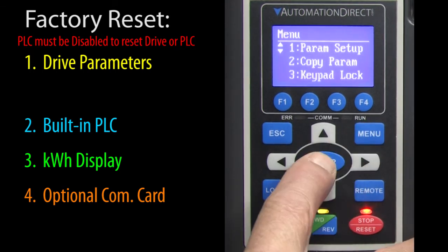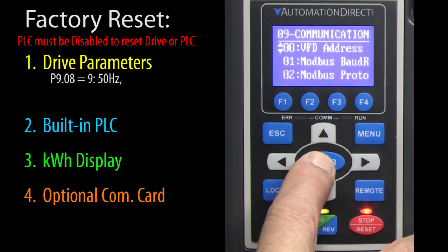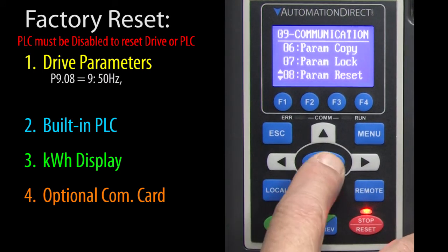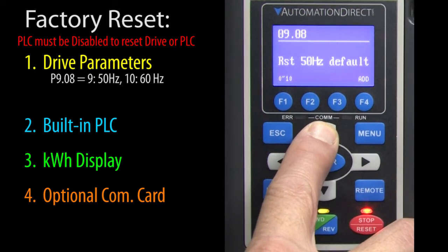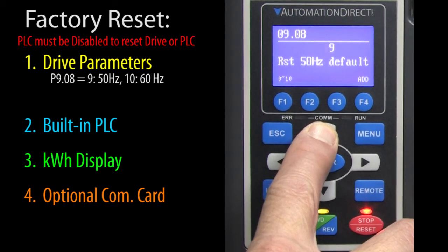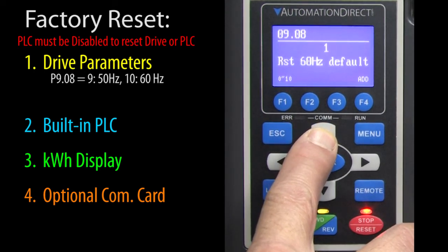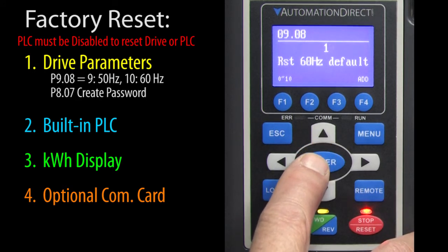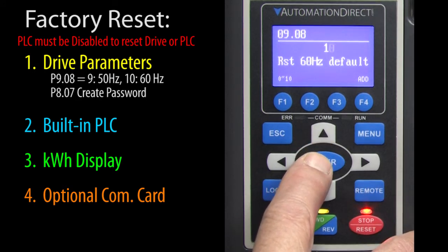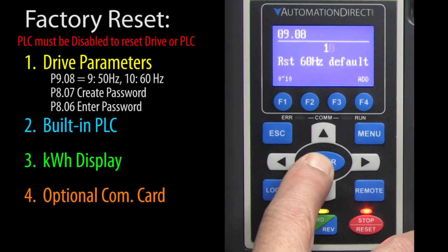To reset the drive, go to parameter 908 and enter a 9 to reset to 50Hz or a 10 to reset to 60Hz. A word of caution: if you created a password in parameter 807, you'll have to enter it in parameter 806 to be able to reset the drive's parameters.